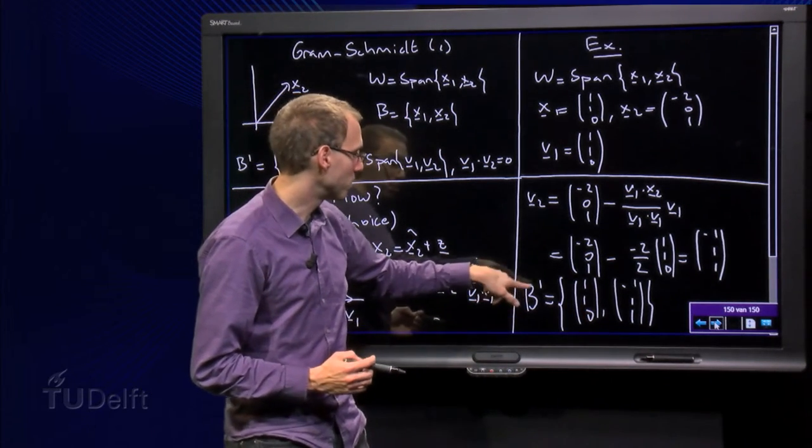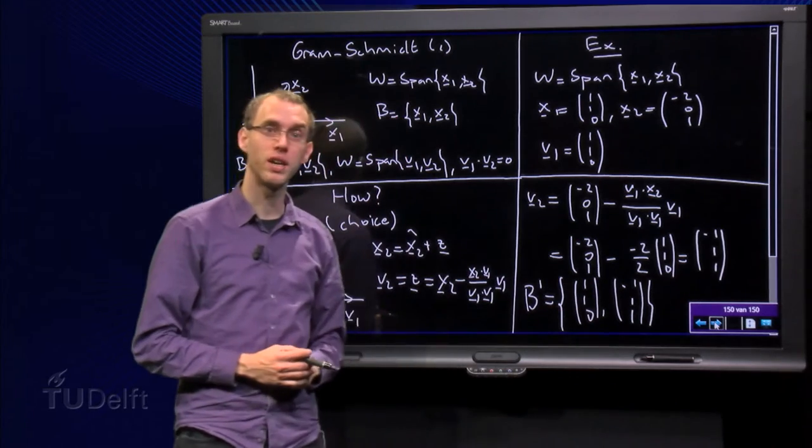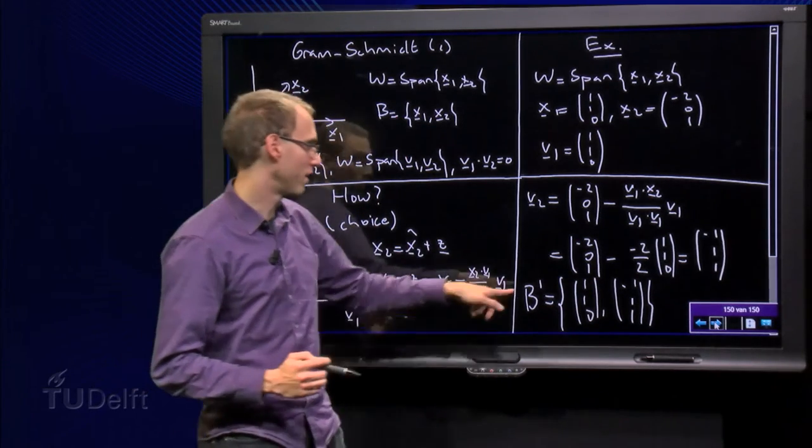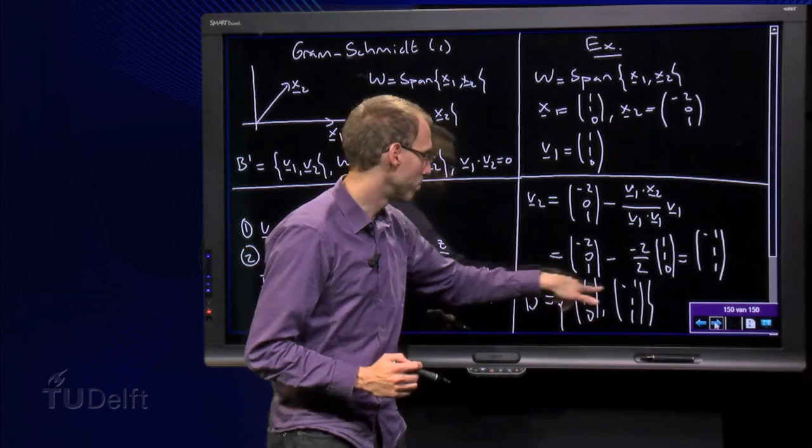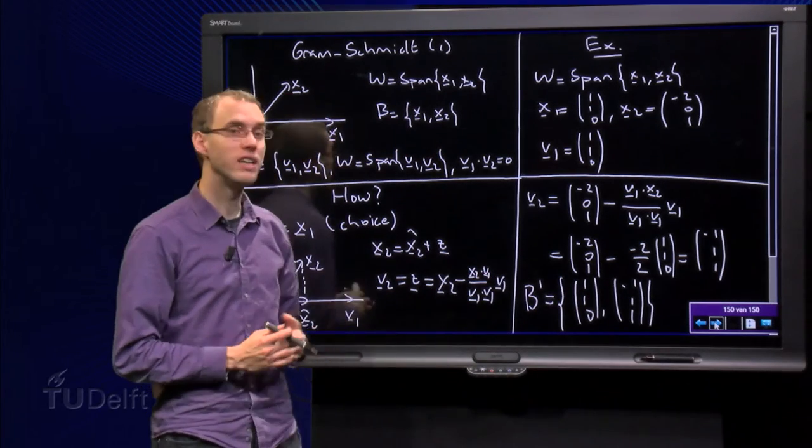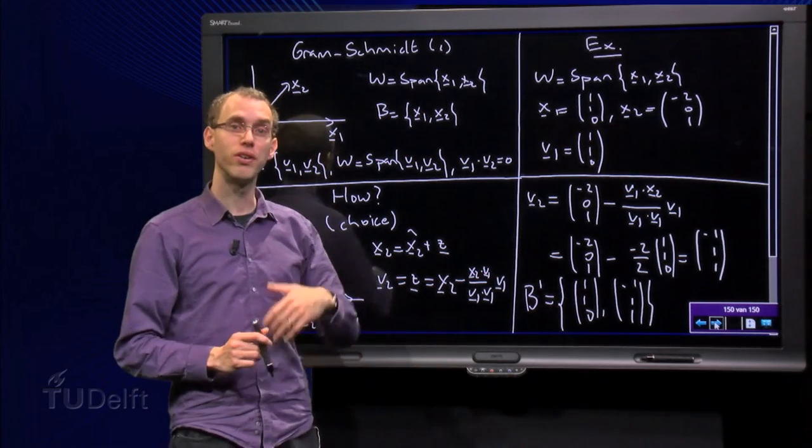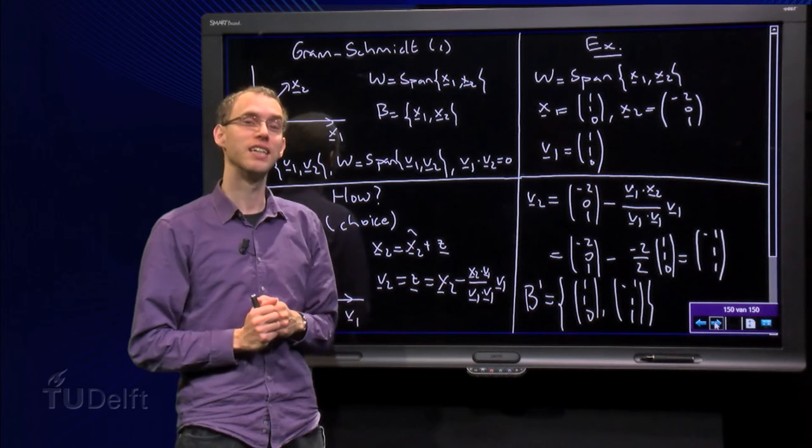So we have (-2, 0, 1) plus (1, 1, 0) equals (-1, 1, 1) as our v2. So I have a new basis consisting of (1, 1, 0) and (-1, 1, 1), and of course always check whether those are orthogonal: minus 1 plus 1 plus 0 equals 0, so yes they are orthogonal, so we have found our orthogonal basis in this case.